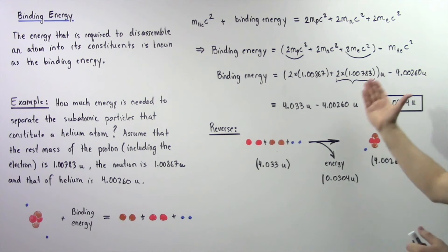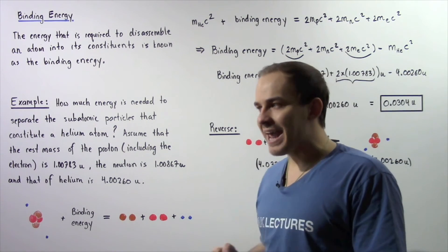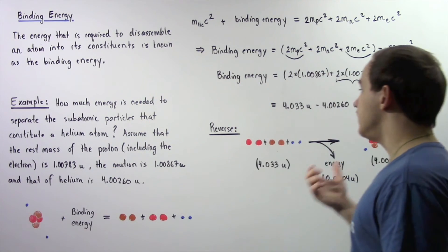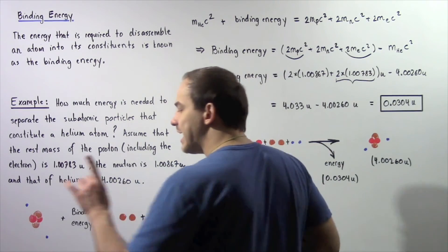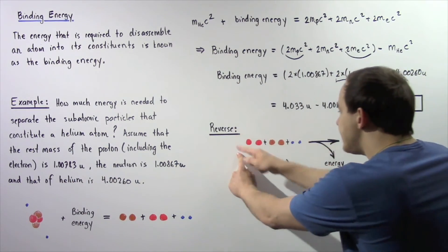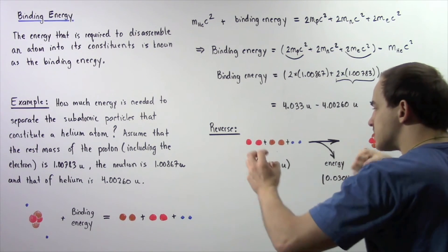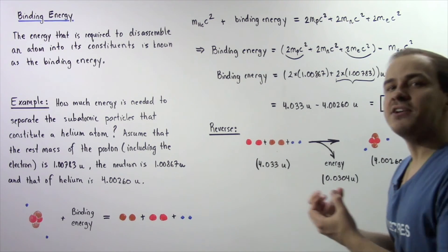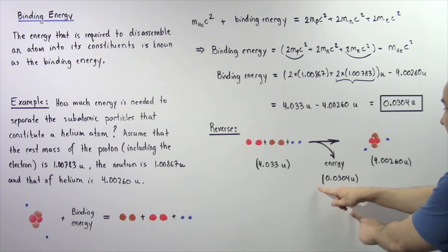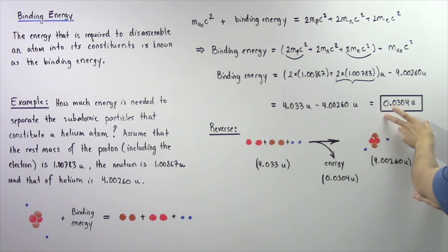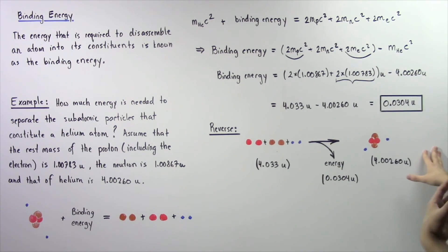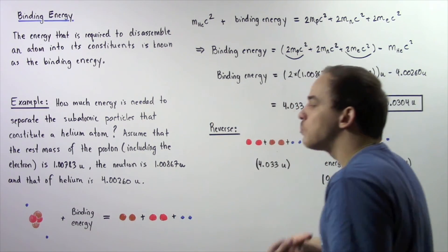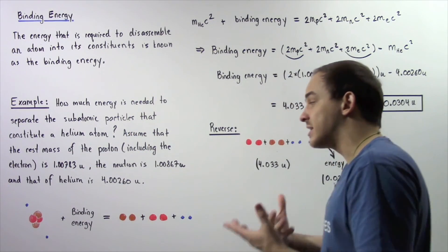We conclude that 0.0304 unified atomic mass units is the binding energy required to break apart a single helium atom. We can also look at this reaction in reverse: if these individual subatomic particles combine, they form a single helium atom and in the process energy is released — equal to the binding energy calculated. This combining process is essentially exothermic, while breaking the atom into its constituents is an endothermic process that requires energy to take place.